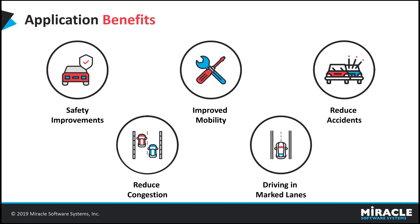With use of HAVs (Highly Automated Vehicles), we can reduce the number of occurrences of accidents. Several causes of traffic congestion could be addressed by HAVs. They maintain a safe and consistent distance between vehicles, helping to reduce the number of stop-and-go waves that produce road congestion. Many manual driving vehicles do not follow lanes properly while driving. We can overcome these types of problems, as AVs travel within the marked lanes only.